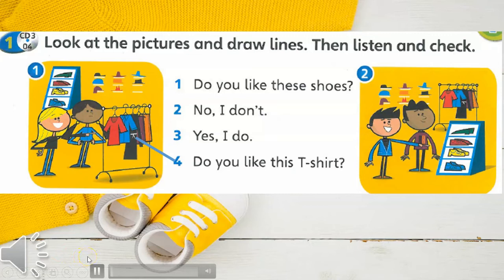Students' Book, page 83, exercise 1. Look at the pictures and draw lines, then listen and check. 1. Do you like this T-shirt? No, I don't.